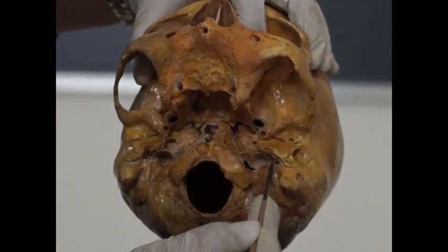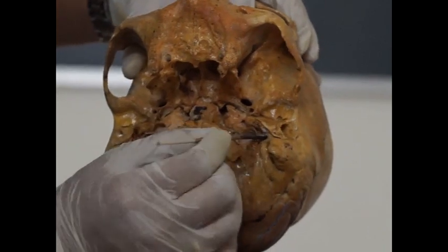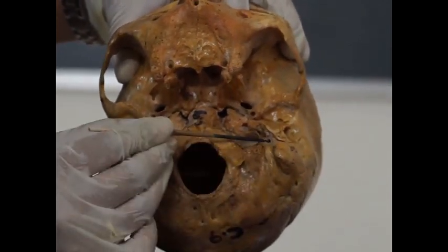This is jugular foramen and this is the styloid process, this is mastoid process and the foramen between the styloid and mastoid is called as stylomastoid foramen.